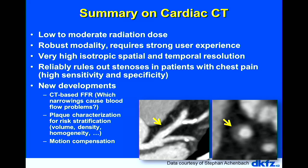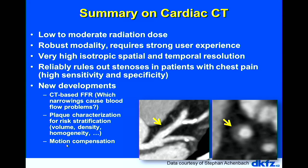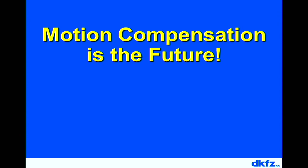One remaining challenge is motion: coronary motion is still too fast. For example, with a 250 ms rotation time, 125 ms is needed to acquire a scan; coronaries moving at 50 mm/s means 6 mm of movement during the scan — too much for sharp depiction. In 10–20% of patients, image quality problems arise from motion artifacts. The future of cardiac CT image reconstruction lies in motion compensation: finding out how the coronary artery moves and compensating for it during reconstruction.